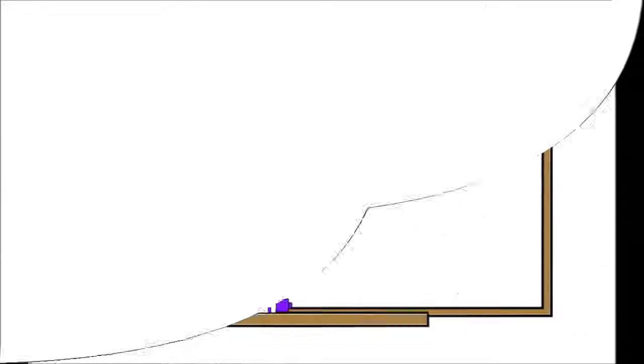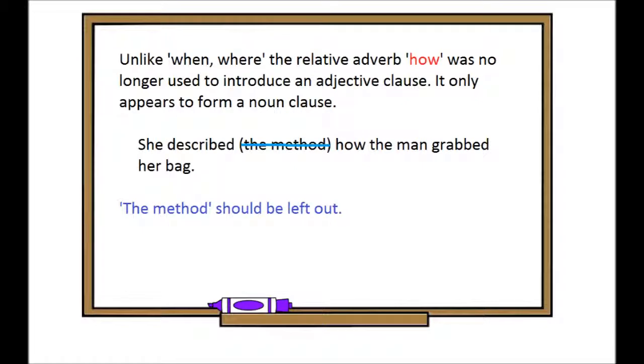Please turn to page 325. Unlike when and where, the relative adverb 'how' was no longer used to introduce an adjective clause. It only appears to form a noun clause. 'She described the method how the man grabbed her bag' - the method should be left out.